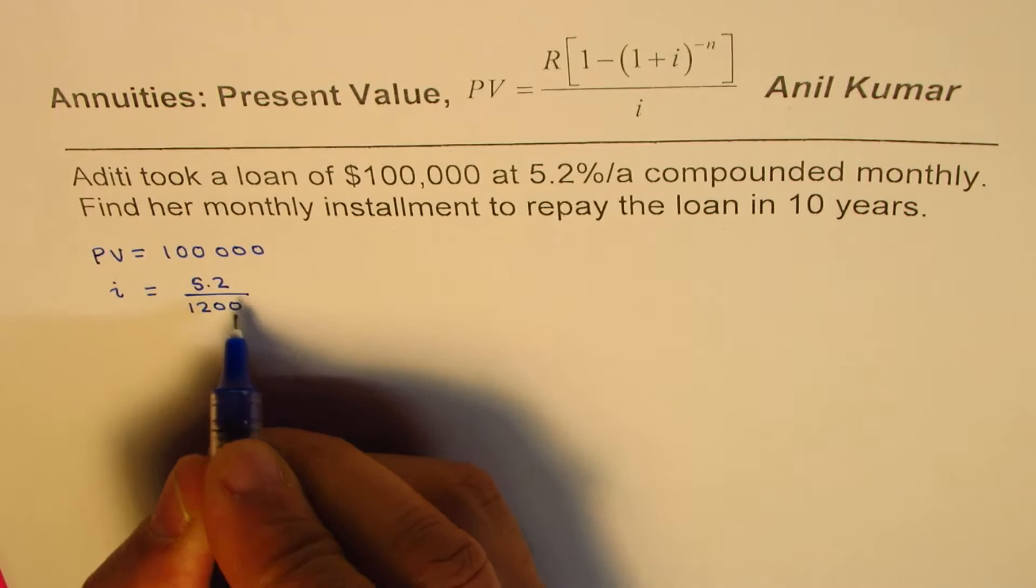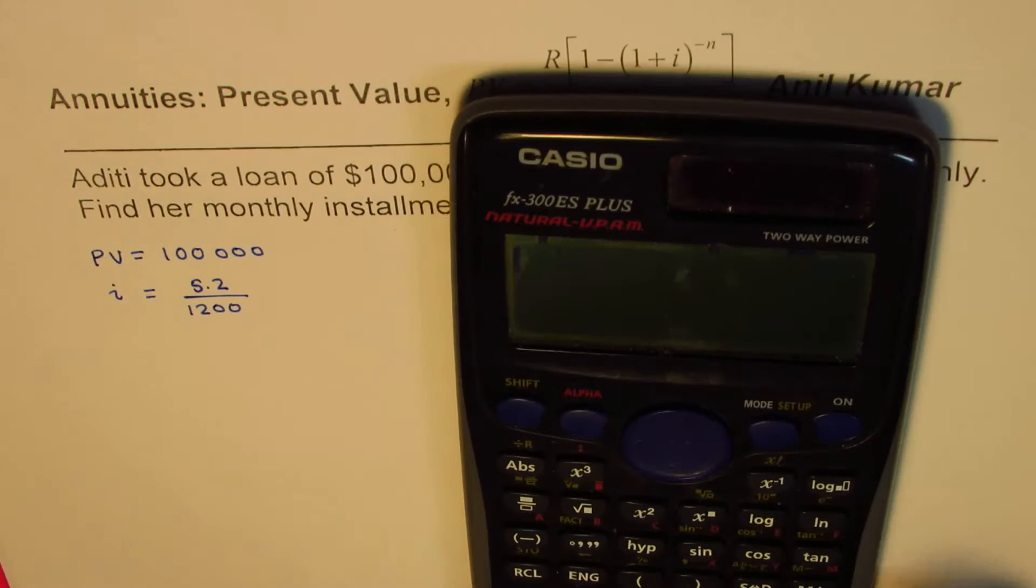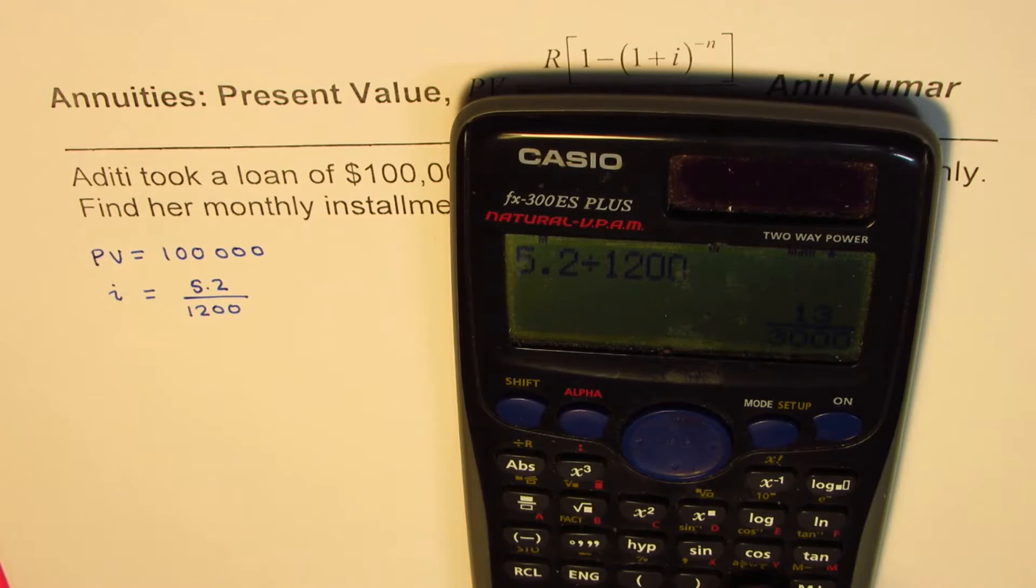So that is the interest. We can calculate using the calculator: 5.2 divided by 1200, that equals 0.00043 recurring in decimals. It's not a very good number to work with.